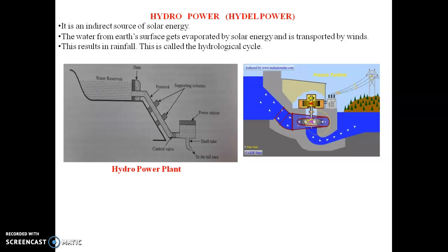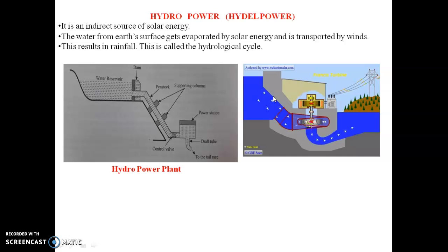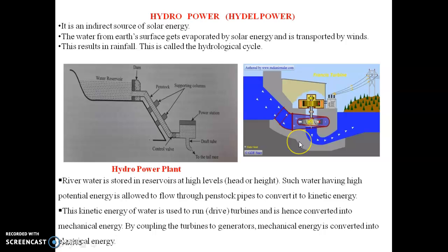The river water stored in reservoirs at high levels has high potential energy. This water is allowed to flow through penstock pipes to convert it into kinetic energy, which is used to run the water turbine and is hence converted into mechanical energy. By coupling the turbines to generators, the mechanical energy is converted into electrical energy.